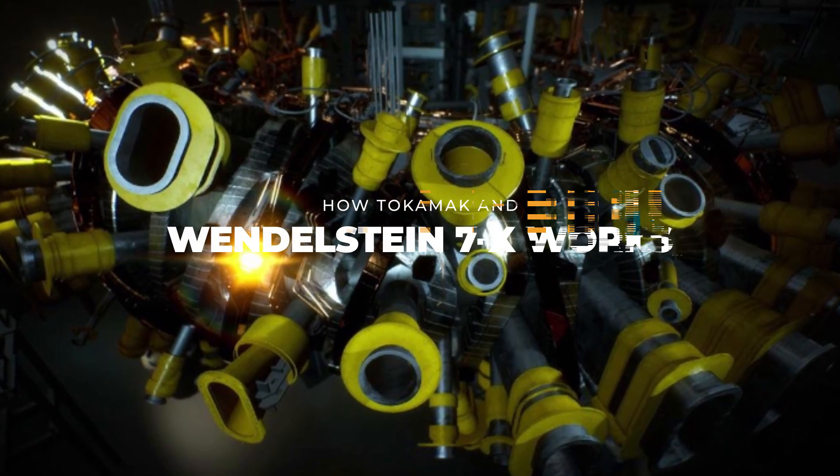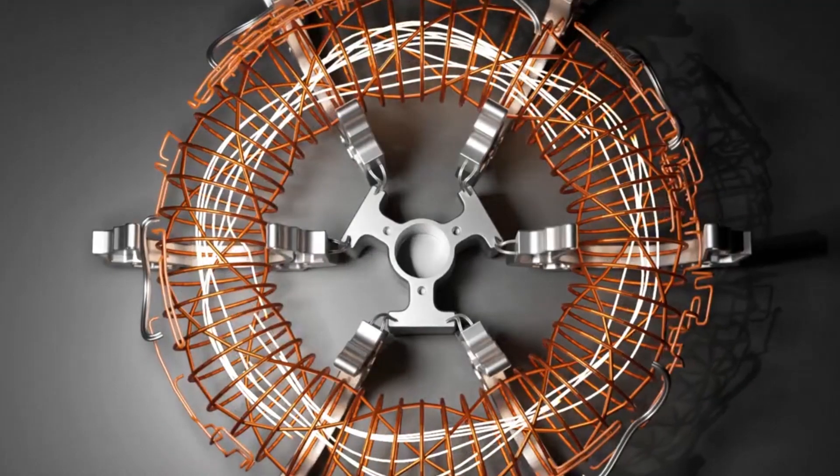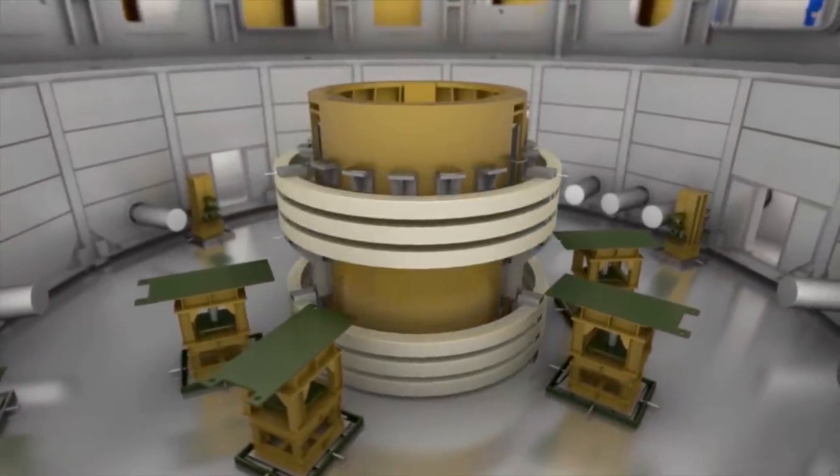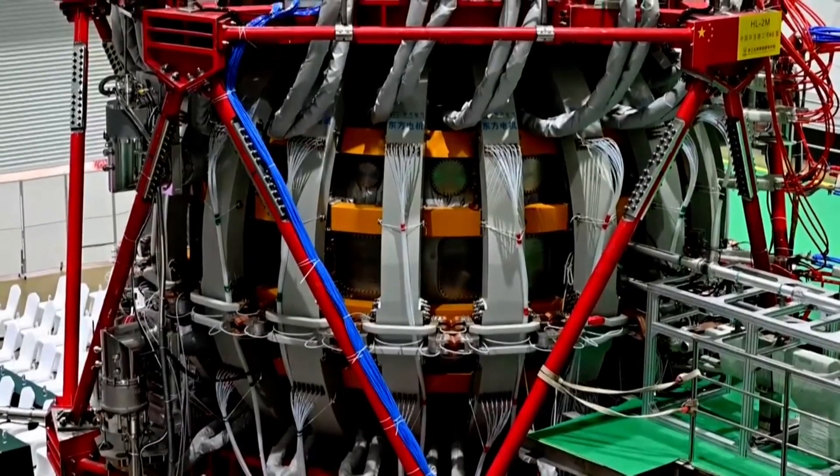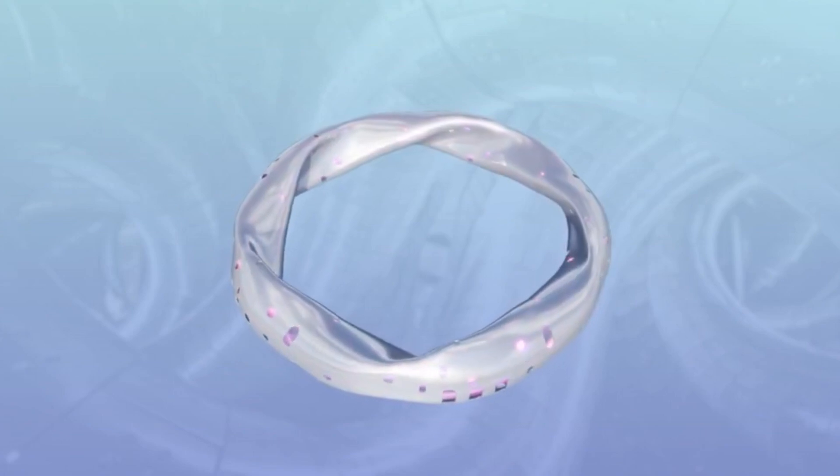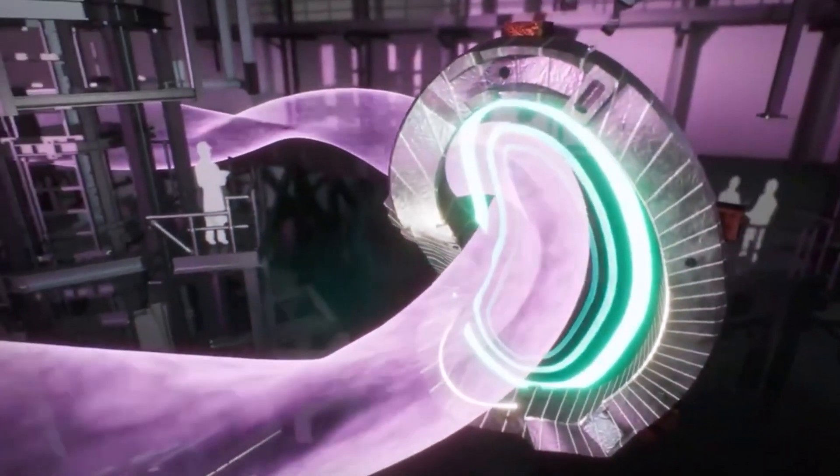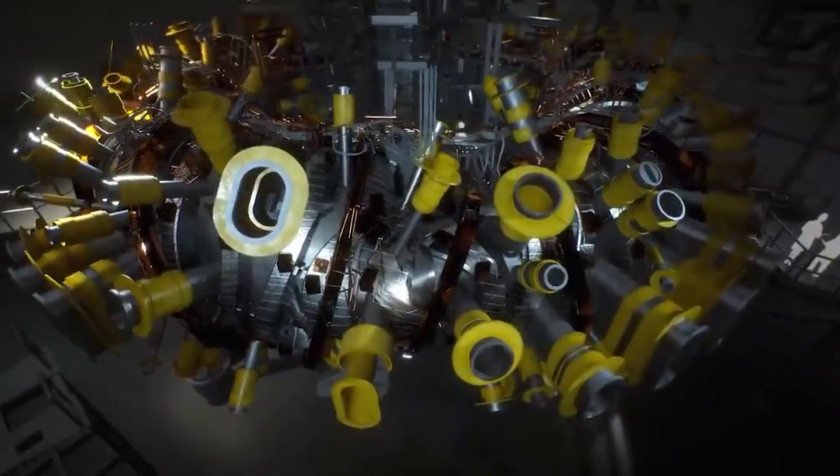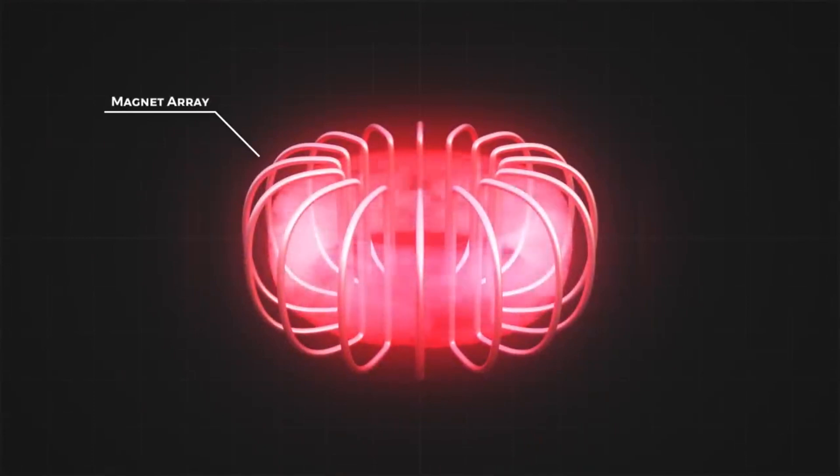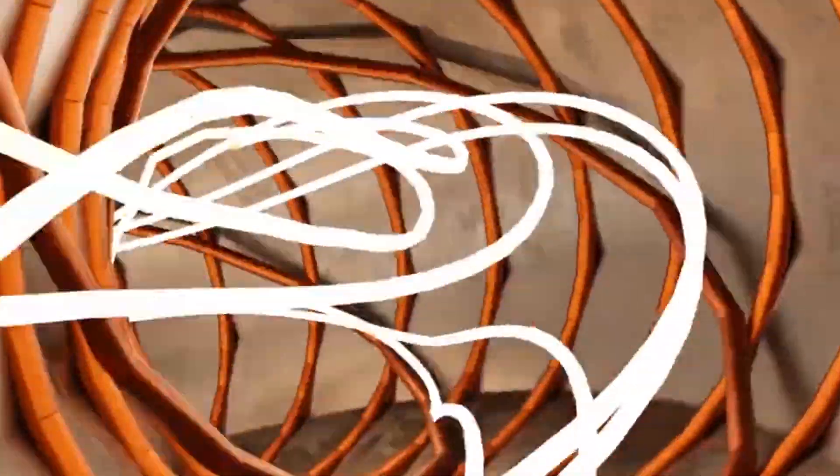Considering a parallel marvel in the form of a stellarator, the Wendelstein 7X, boasting 50 superconducting magnet coils, stands at approximately 3.5 meters tall. Unlike the traditional donut shape of a tokamak, the stellarator locks plasma in a captivating, twisting, and spiraling configuration. Here, the electrons and ions are orchestrated to flow around the tube in an electric current induced by a transformer-like setup. This current creates a vertical, looping magnetic field, merging seamlessly with the existing field along the tube's length, giving rise to the essential spiraling field lines.